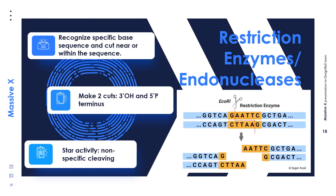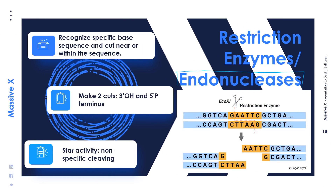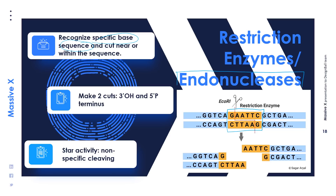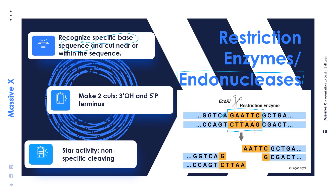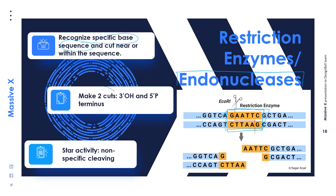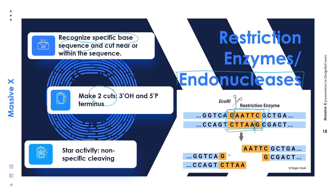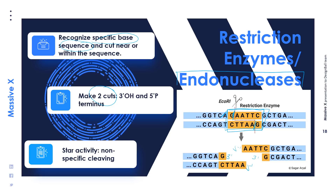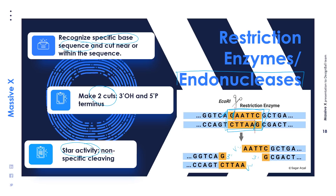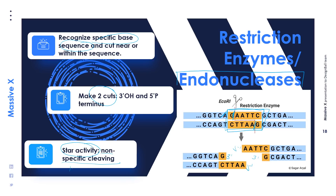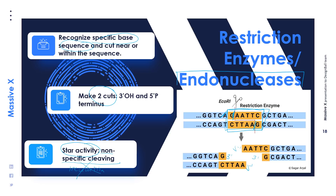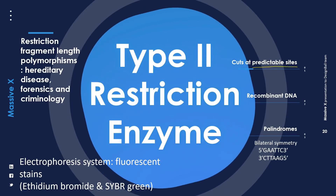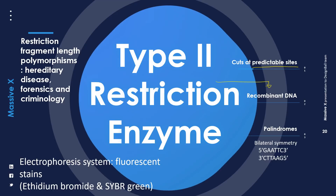Lastly, we have restriction enzymes or endonucleases. These enzymes recognize specific base sequences — for example, a restriction enzyme would recognize the sequence GAATTC, and it will make a cut near or within the recognized sequence. It makes two cuts, one on each strand, producing a 3 prime hydroxyl and a 5 prime phosphate terminus. Star activity is a term for nonspecific cleaving, which usually happens when incubation temperatures are not optimal. An example is the type 2 restriction enzymes, which cut at predictable sites and have their greatest utility in recombinant DNA experiments.